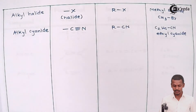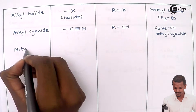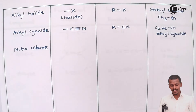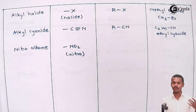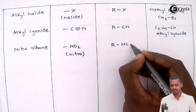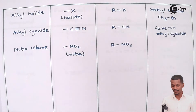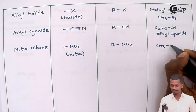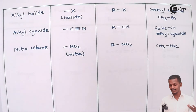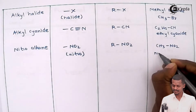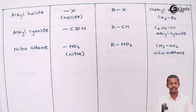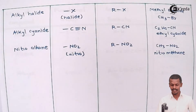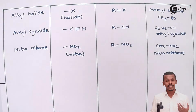The next class is nitroalkanes. The functional group attached to the alkyl group is NO2, known as the nitro group. The general formula is RNO2. An example is CH3NO2, which consists of one methyl group and one nitro group, so the name is nitromethane. Nitromethane is classified as a nitroalkane, and the functional group is NO2.